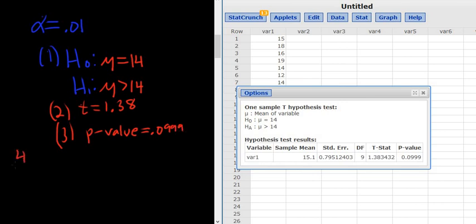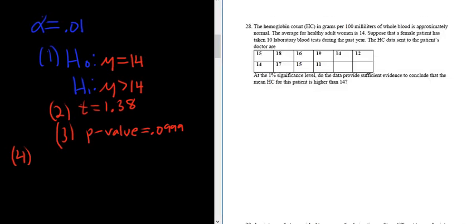Step four is the test decision. We have to decide whether we reject or fail to reject. We look at alpha and the p-value to determine that. So if the p-value is bigger than alpha, we fail to reject. If the p-value is less than or equal to alpha, we reject. In this case, the p-value is bigger than alpha, so we fail to reject H sub 0.